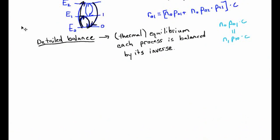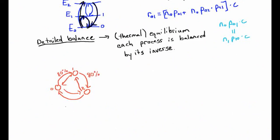But there are caveats. Suppose we have three states — state 0, state 1, and state 2 — where transitions cycle: 0→1, 1→2, 2→0, and the reverse directions 1→0, 2→1, 0→2. Now suppose we assign strange probabilities: 80% probability for the forward cycle (0→1, 1→2, 2→0) but only 10% for each reverse transition.